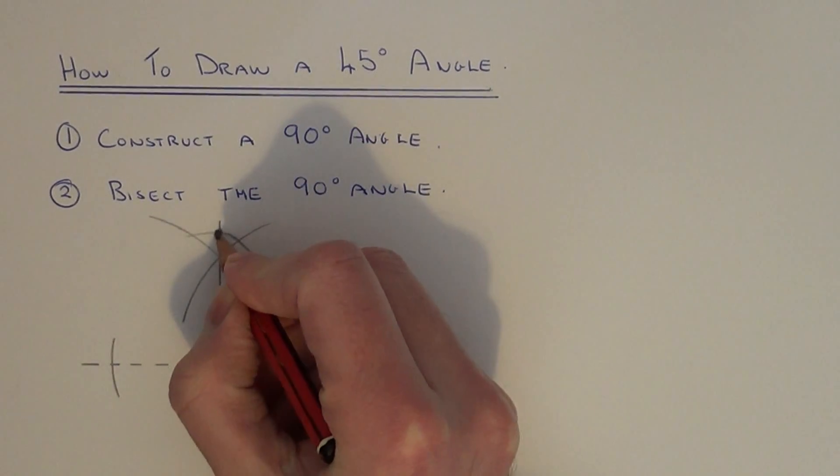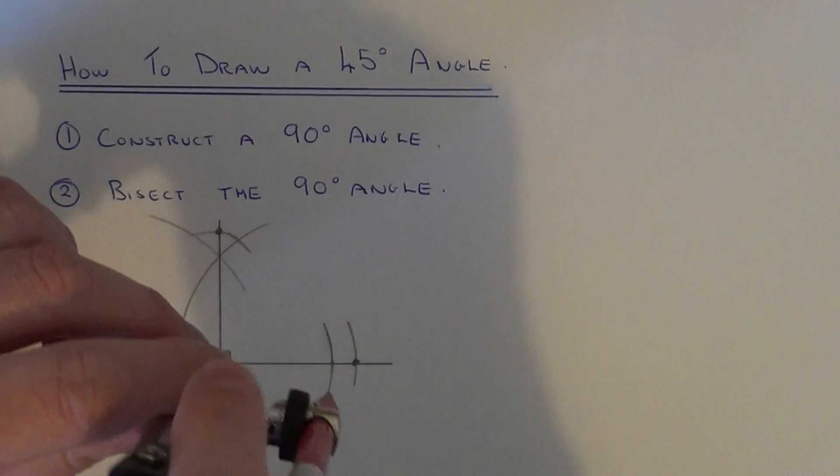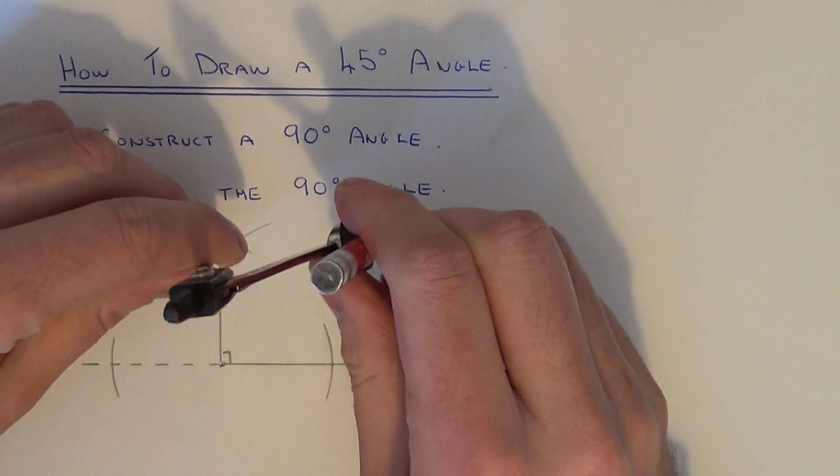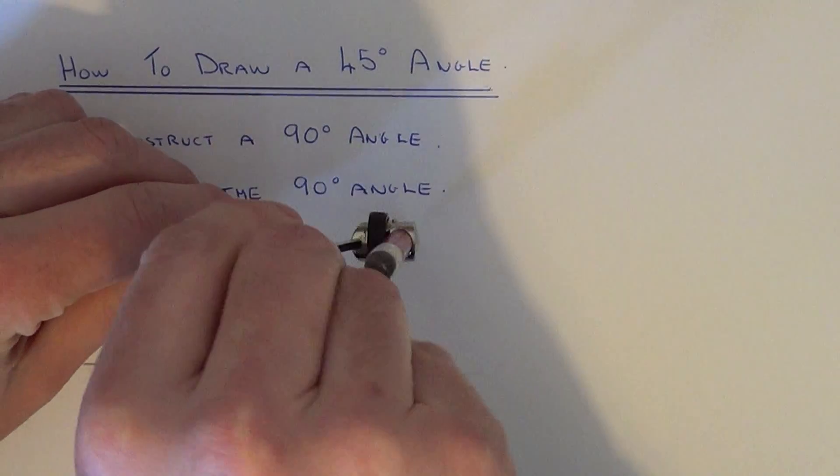Move your compass point to the two intersection points and do two more arcs.